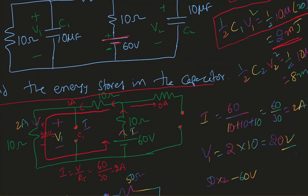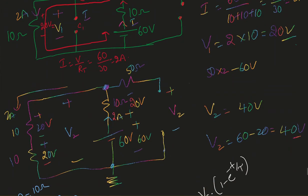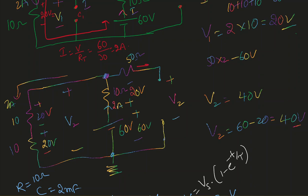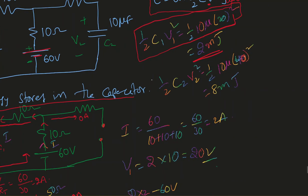When it comes to capacitor 2, I need to find the voltage drop across it. Redrawing the circuit, the current through the capacitor 2 branch is 0 because it's open circuit. The voltage across C2 equals the source voltage minus the first resistor drop: 60 minus 20 = 40 volts. Alternatively, 2 amperes through two 10-ohm resistors gives 20 + 20 = 40 volts total. So V2 = 40 volts, and the energy stored is half C2 V2 squared, which is approximately 8 millijoules.